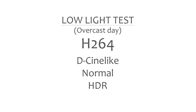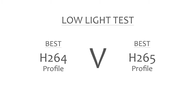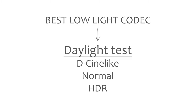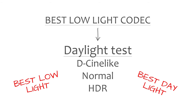The way we're going to be testing these settings is by running through a series of tests. We'll run a low light test with the H.264 codec, testing all three profiles — D-Cinelike, Normal and HDR. We'll then run the test again with the H.265 codec, and put the best low light profile from H.264 against the best from H.265. The winning codec will then go on to the daylight test, where we'll test all three profiles in bright daylight settings.